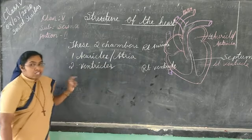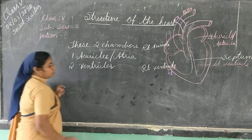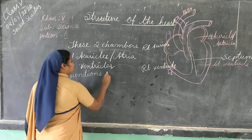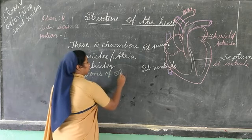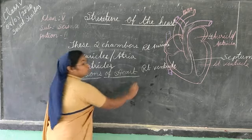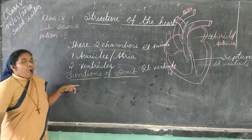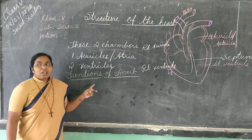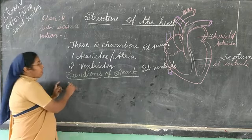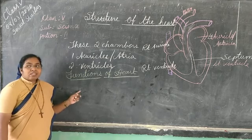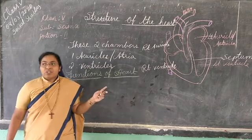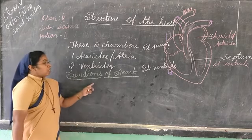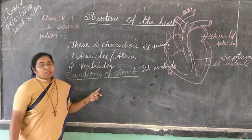Next, we will learn about the functions of the heart. The heart pumps blood to the arteries. The heart supplies oxygen-rich blood to the lungs and also supplies oxygen-rich blood to the body parts.